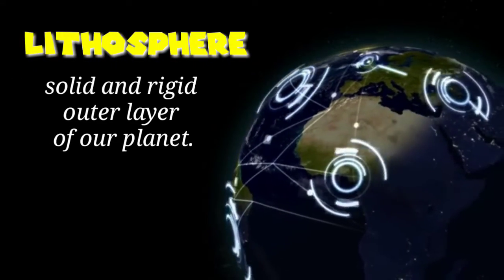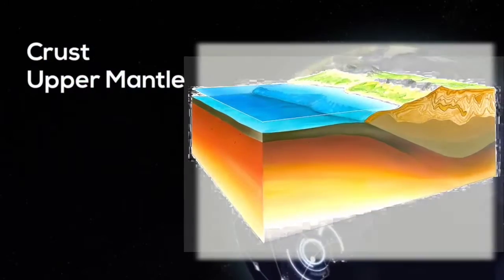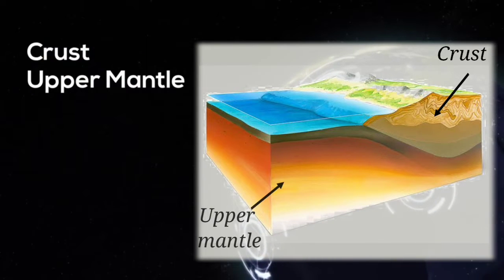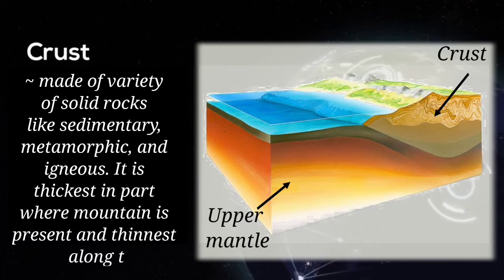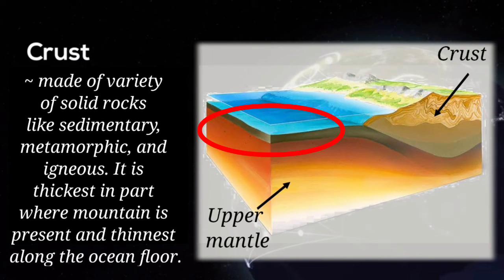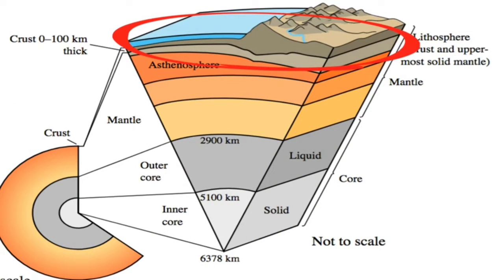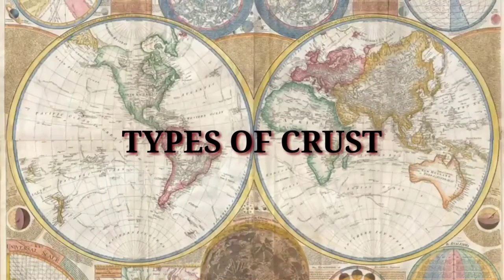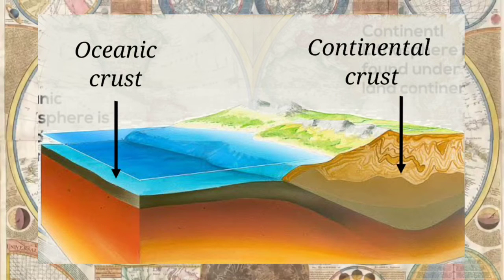The Earth's lithosphere is a solid and rigid outer layer of our planet. It includes the crust and the upper part of the mantle. The crust is made of a variety of solid rocks like sedimentary, metamorphic, and igneous. It is thickest in parts where mountains are present and thinnest along the ocean floor. The lithosphere is the top layer of the Earth where the Earth's crust is located. Because the Earth consists of land and water, the crust is divided into two parts: the oceanic crust and the continental crust.